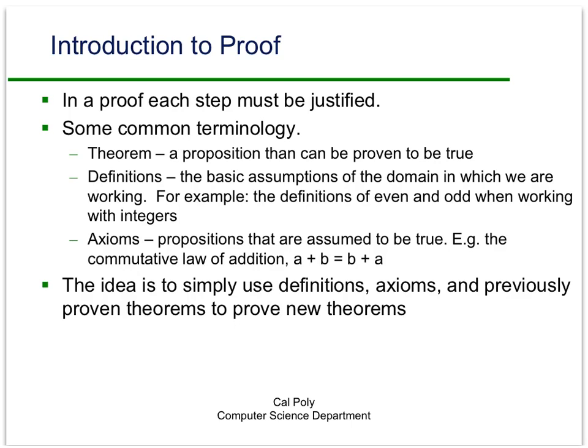Axioms are propositions that are assumed to be true about the domain in which you're working. So for example, we're going to be working in the domain of the integers, and the integers follow some laws that you're familiar with: commutative law, for instance, the associative law, and the distributive law. So we'll be using those laws to justify each step in our proofs. So again, the idea is really pretty simple. You use definitions and axioms and previously proven theorems to justify the steps that allow you to prove a new theorem.